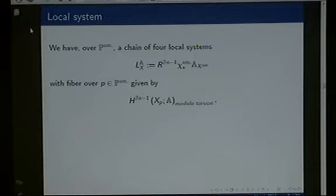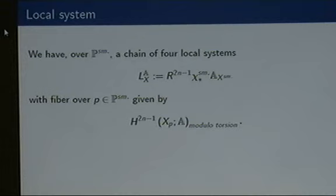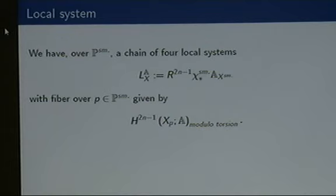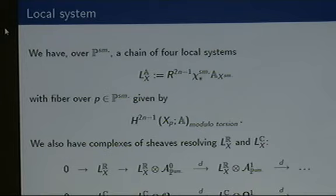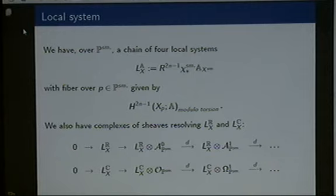We have four local systems because the cohomology is locally constant if we forget about the complex structure. We have a resolution of the local systems by C-infinity forms — real valued — and omega is holomorphic forms. Since P smooth is affine, we can compute complex cohomology directly off the cohomology of the bottom Čech complex.